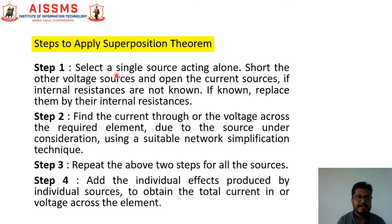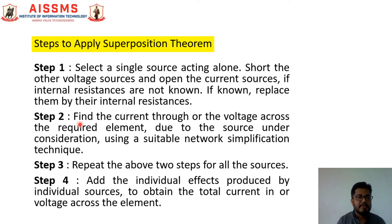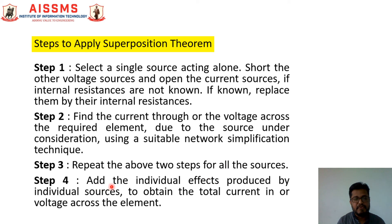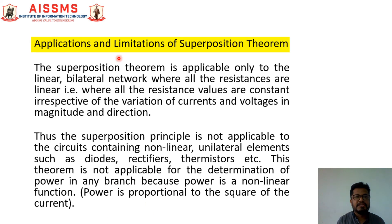Now let us see the different steps to apply the Superposition Theorem. Step 1: select a single source acting alone — short the other voltage sources and open the current sources if internal resistances are not known. If internal resistances are known, replace the voltage source and current source by their internal resistances. Step 2: find the current through or voltage across the required element due to the source under consideration using a suitable network simplification technique. Step 3: repeat the above two steps for all sources present in the network. The final step is to add the individual effects produced by each source to obtain the total current in or voltage across the element.